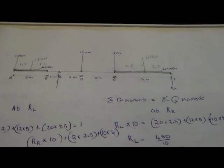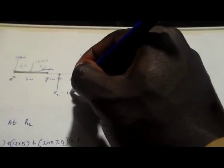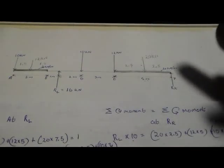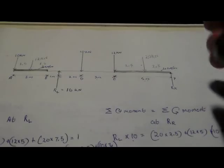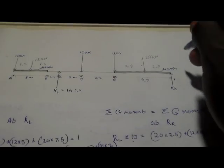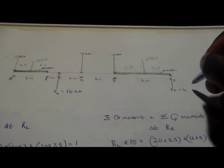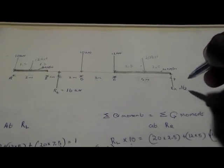That's how we calculate the reactions on the beam. In the next video, we're going to draw the shear force diagram using this example. So to summarize: RR is 16 kilonewtons and RL is 48 kilonewtons.